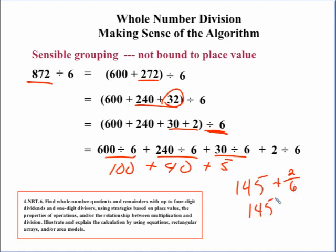And, again, you can have the kids simplify this to 145 and 1 third. Or, again, if the student's at the stage where you're dealing with just remainders, you can get 145 groups of 6 with a remainder of 2.